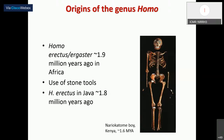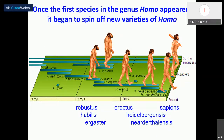A fossil of a young boy excavated from Kenya has been dated to 1.6 million years. About 2 million years ago, the genus Homo arrived and began to produce new varieties and species of Homo: Homo robustus, habilis, ergaster or erectus, all of which arose between 1 and 2 million years ago, followed by the Heidelberg man, the Neanderthal man, and eventually Homo sapiens. This is essentially the timeline of our evolution — from the split from great apes to modern humans.